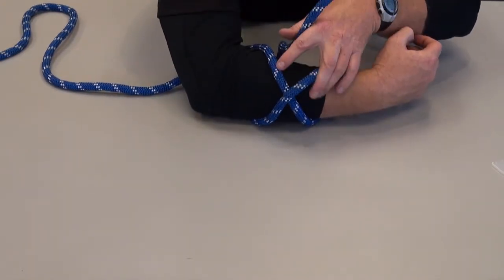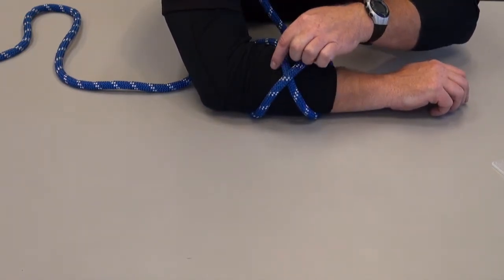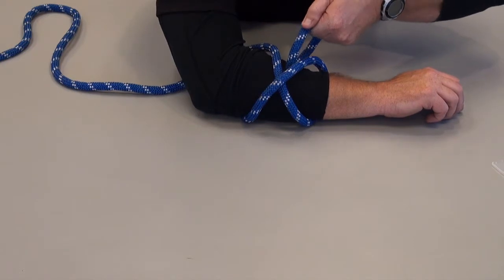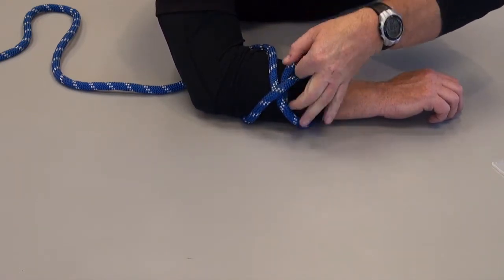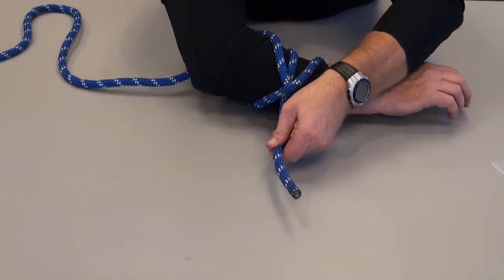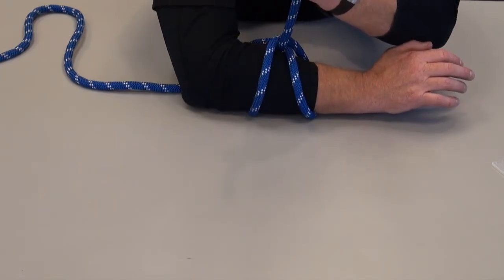As the rope comes back around, we're going to visualize that X segment. And then we're going to trace that tail underneath the X so that we're redirecting that rope in the opposite direction of the other tail coming in, resulting in our clove hitch.